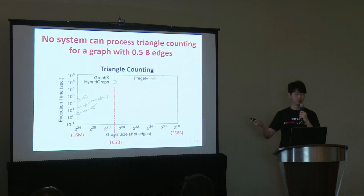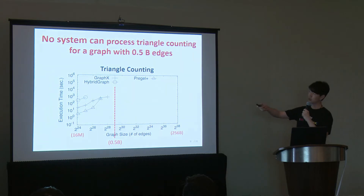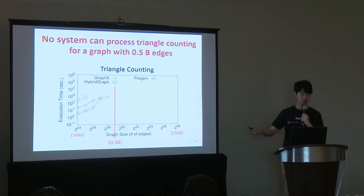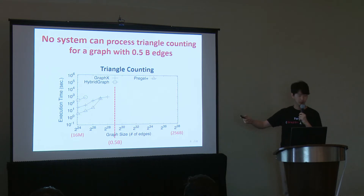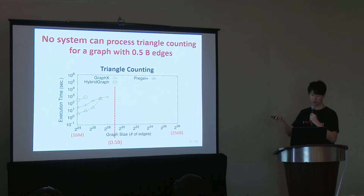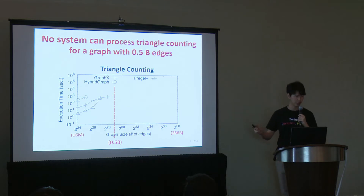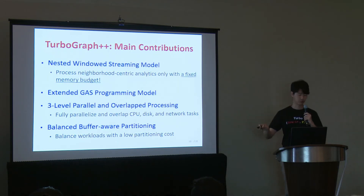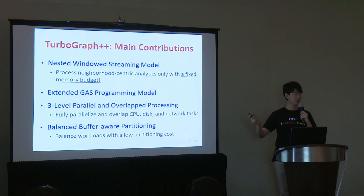To confirm our claim, we repeated the experiment for triangle counting. No system can process triangle counting on graphs with even half a billion edges, which is very small. There is also no result for Gemini and Chaos because their limited processing models do not support neighborhood-centric analytics. Given these two motivations, we developed a new system called TurboGraph++.